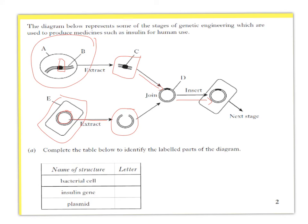It asks you to identify the labelled parts. So the bacterial cell in this situation here is E. The insulin gene is C. And the plasmid, well the plasmid isn't labelled until this part here, so the plasmid is represented by D. You'll see how it's important to know the process in order to be able to identify the different sections.